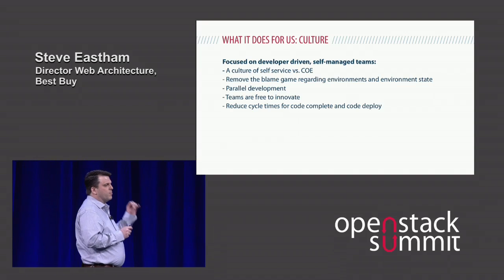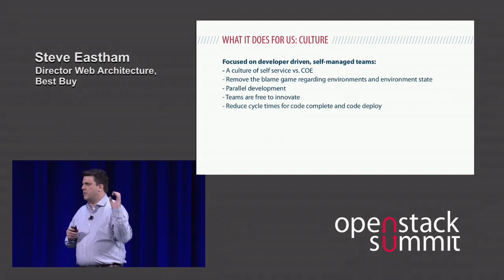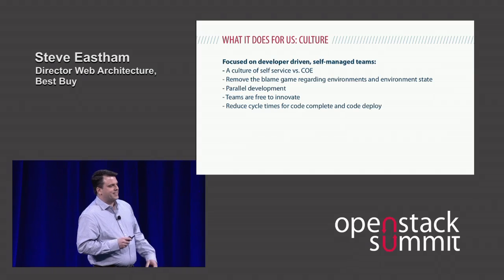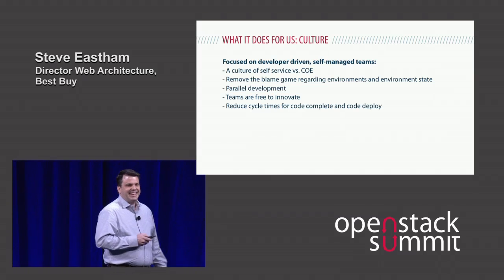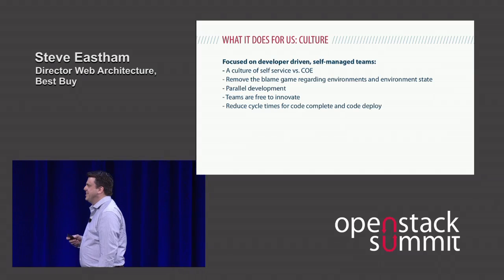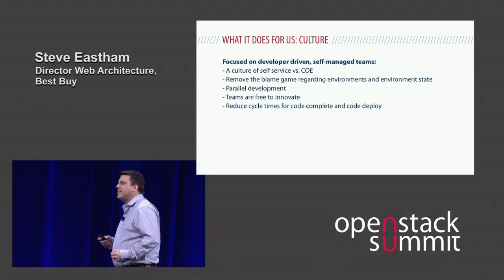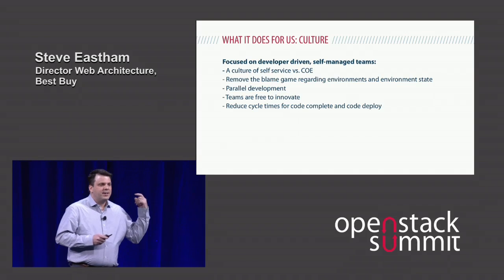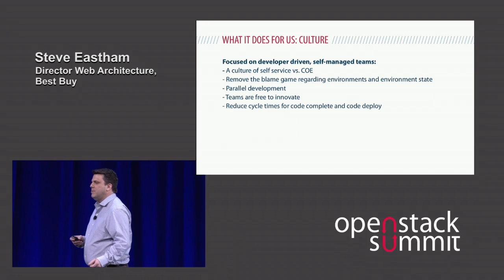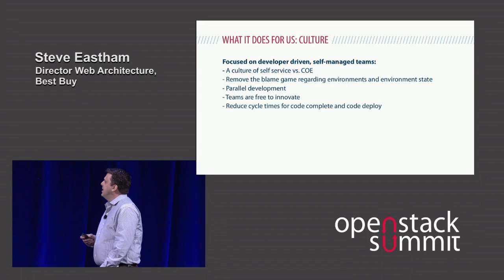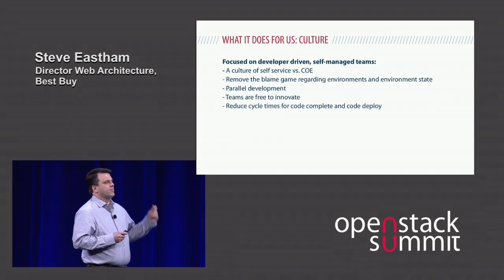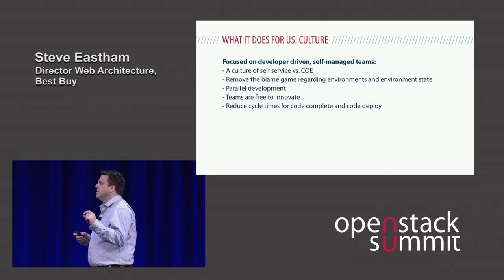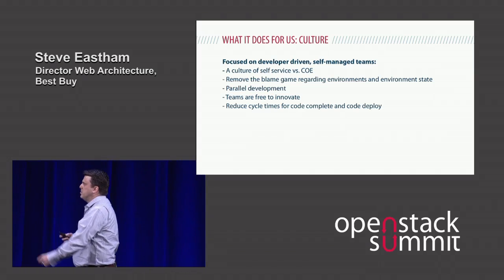We really want to let teams run and do their own thing — launch and run their own environments. Get away from the blame game, get away from the center of excellence. Allowing teams to innovate: if they want to test some new cache platform or new NoSQL platform, here's an API, here's a Jenkins job you can run — run your OmniTank. And finally, it's all about reducing that cycle through dev, test, release — really reducing the delta to get code complete and pushed out to release to the world.